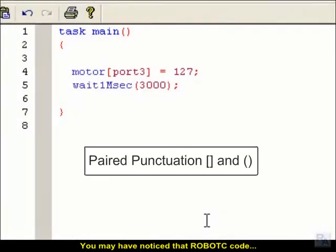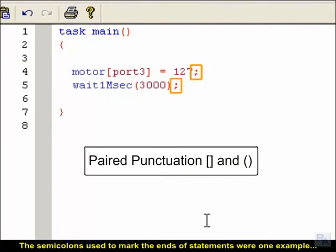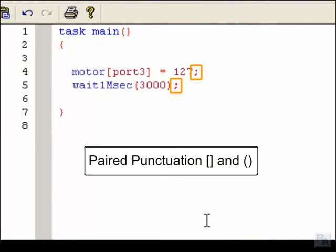You may have noticed that Robot C code tends to use a lot more punctuation than English. The semicolons used to mark the end of statements were one example, but most Robot C punctuation comes in pairs.